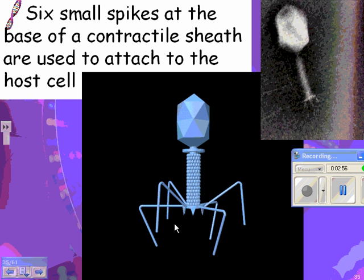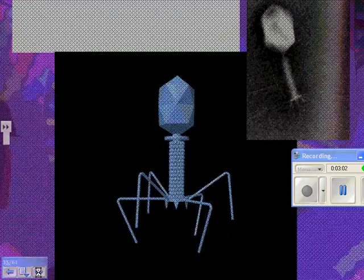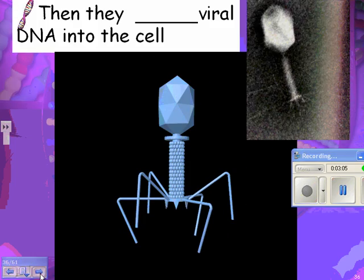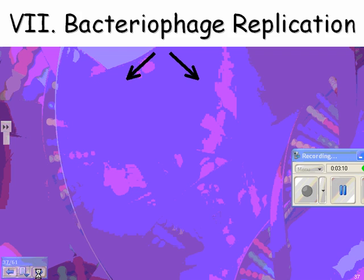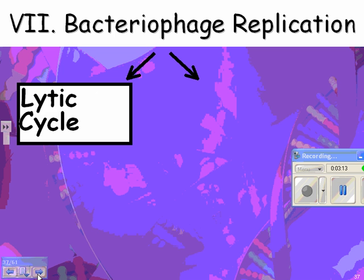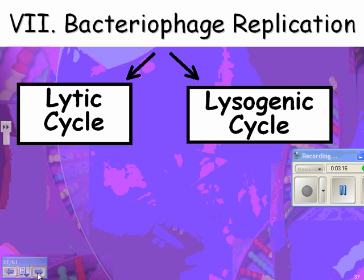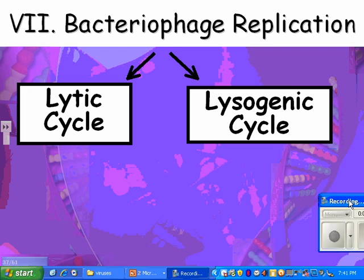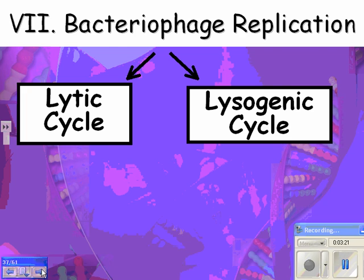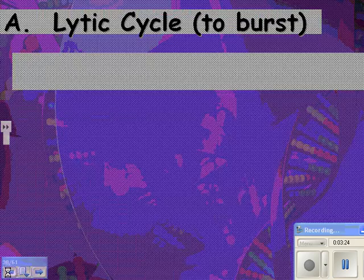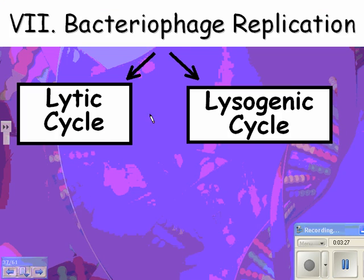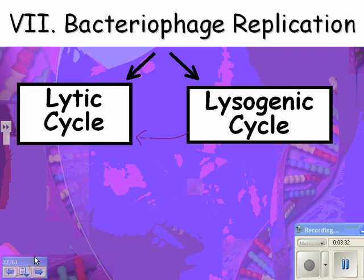There are six small spikes at the base of the contractile sheath that are used to attach to the host cell — these things are kind of sinister looking, because they are. Then they inject the viral DNA into the cell. There are two different types of bacteriophage replication: the lytic cycle and the lysogenic cycle. The virus can go into either one of these cycles, and if it goes into the lysogenic one, it can come out later and go into the lytic one.